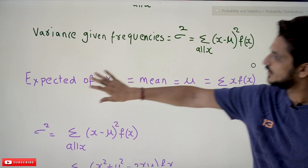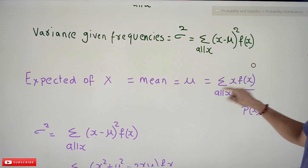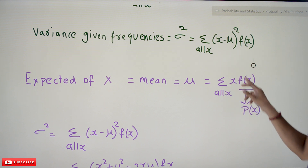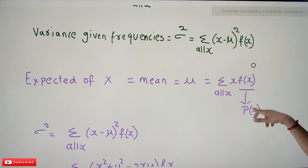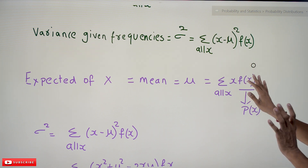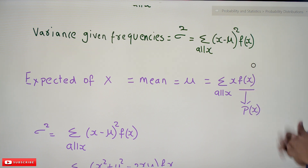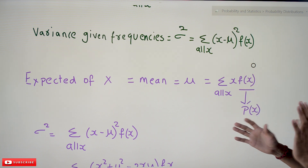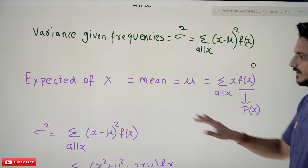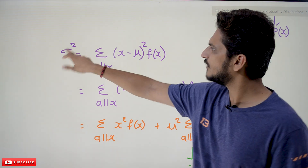Similarly, in our last class we discussed that the expected value E(X) equals the mean mu, which equals the sum over all X of X times F(X). F(X) here means probability of X — in order not to confuse you, we are using F(X), but in our variance equations F(X) provides probability values. These basics were already discussed, hoping that you know all of these.